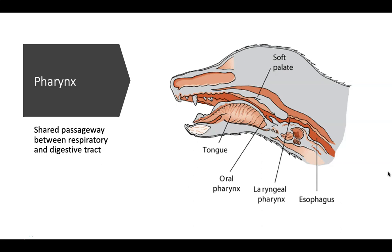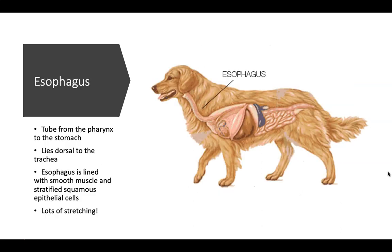The pharynx, which we discussed with the respiratory system, is also relevant to the digestive system. The pharynx is the throat and is the shared passageway between the respiratory and digestive tracts. It consists of the hard palate — mainly the roof of the mouth — and then the soft palate carrying on through to the back of the throat.